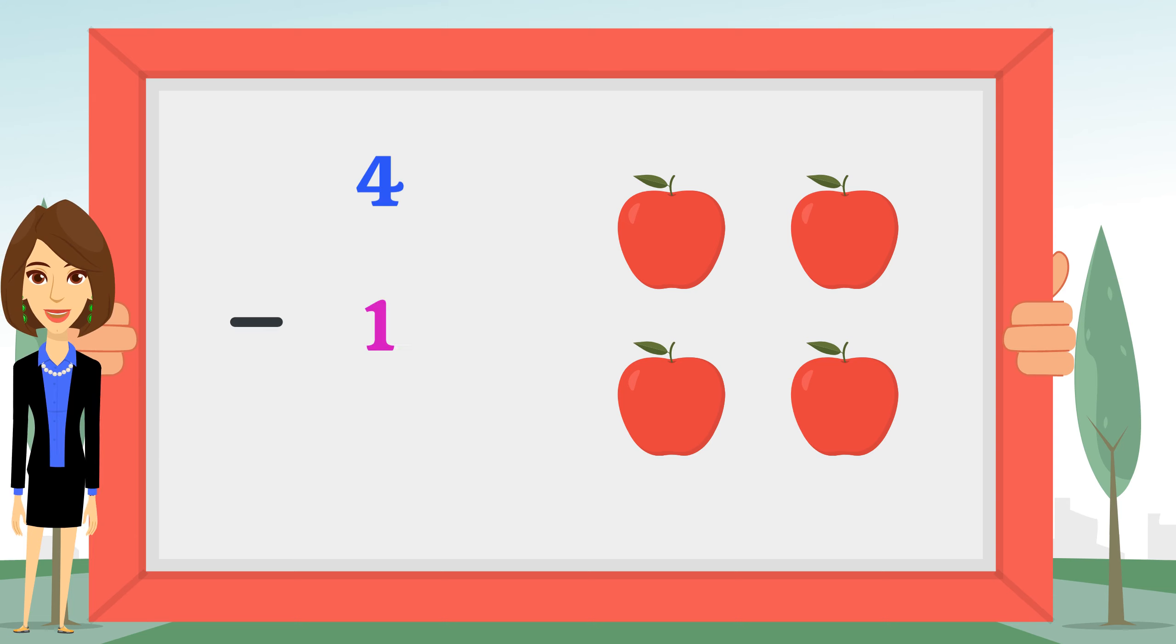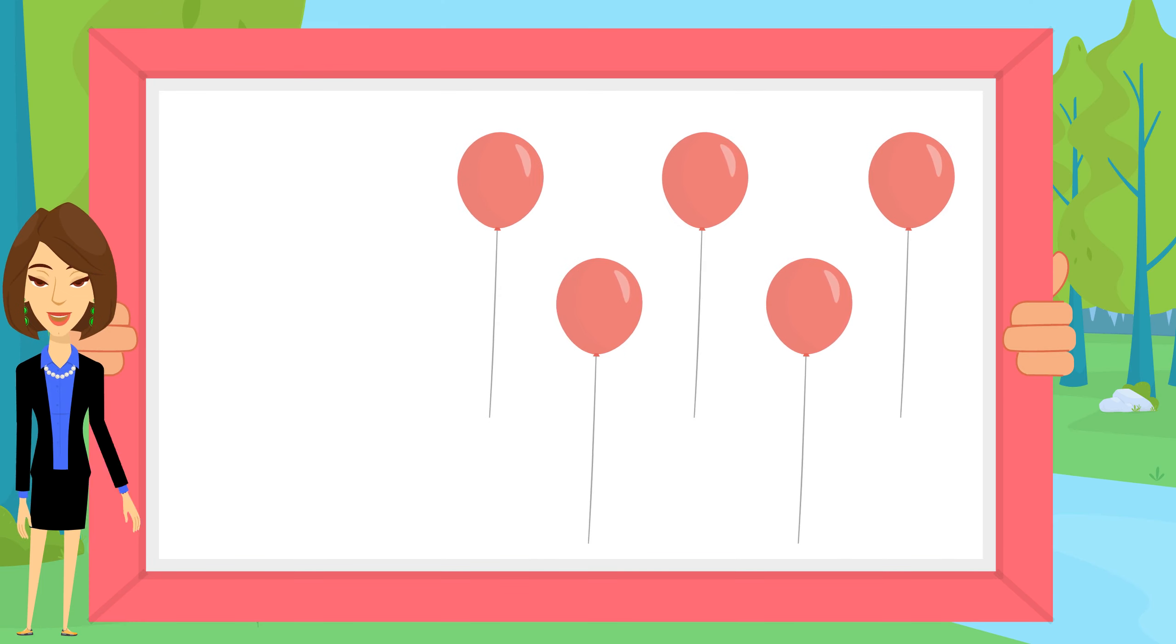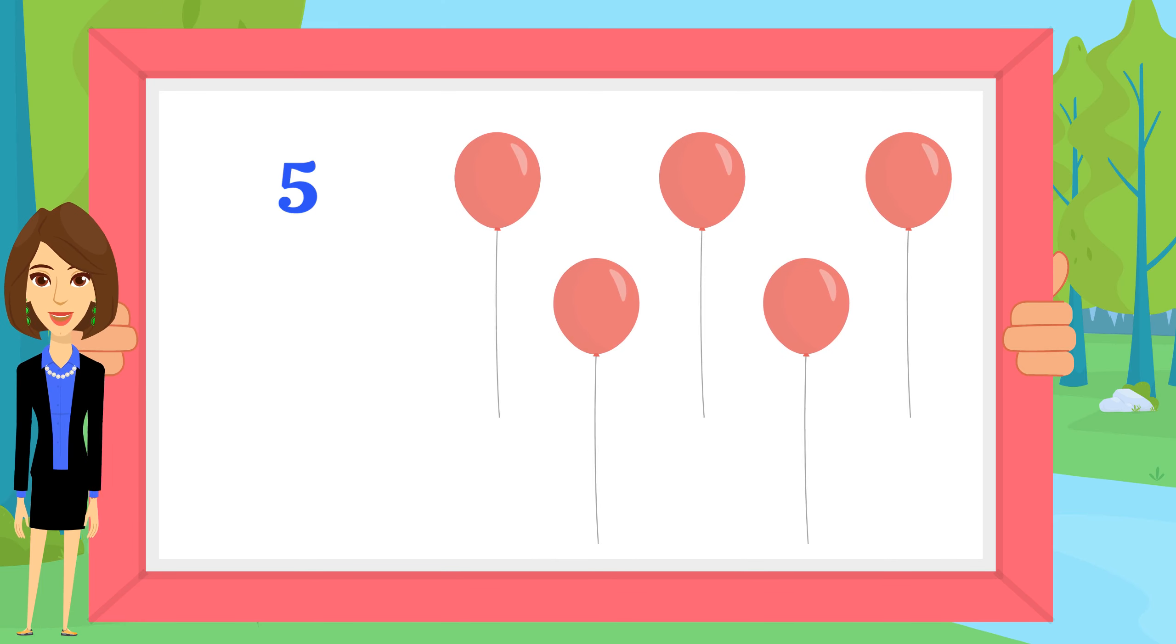Here we have five balloons. If we take out three balloons, how many balloons will be left? Taking three out of five is two, so five minus three is two.